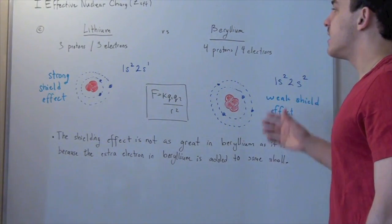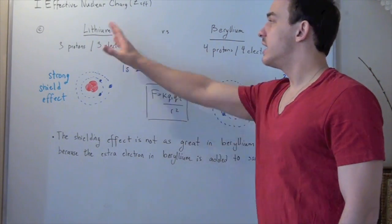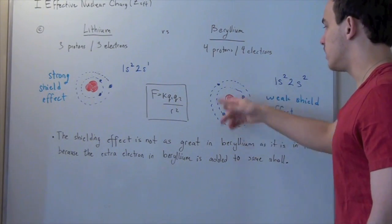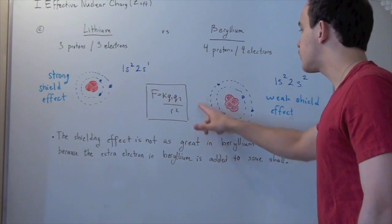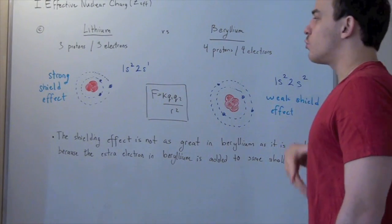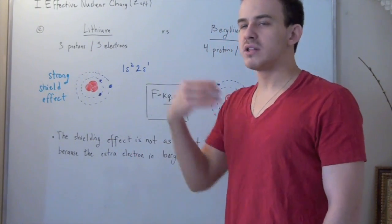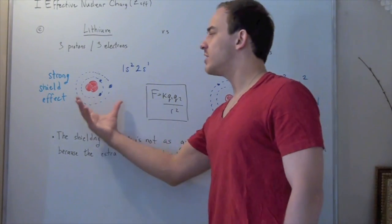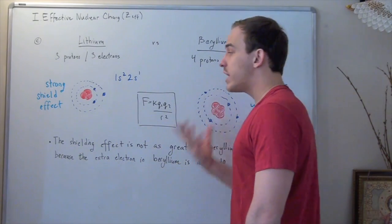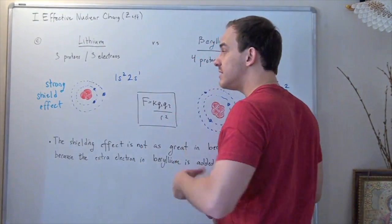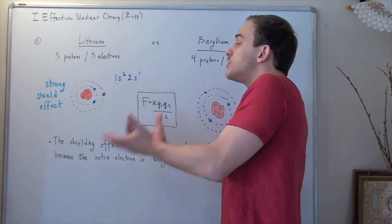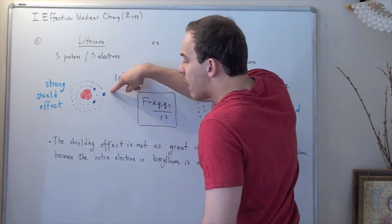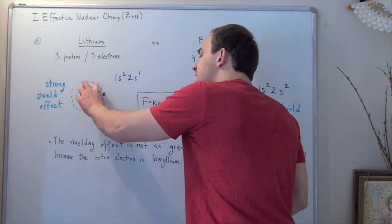Beryllium has one more electron than lithium. Like lithium, it has two electrons in the inner 1s orbital, but because of that extra electron it has two electrons in the outermost 2s orbital. The ratio of inner to outer electrons in lithium is two to one, while in beryllium it is two to two — a smaller ratio. Because lithium's ratio is greater, the inner electrons shield more of the charge, so lithium's single outer electron does not experience as much nuclear charge as it otherwise would.